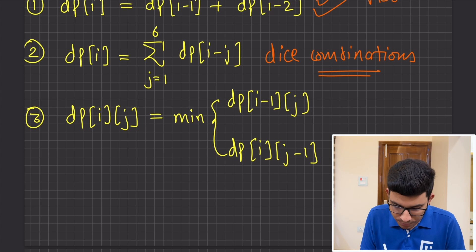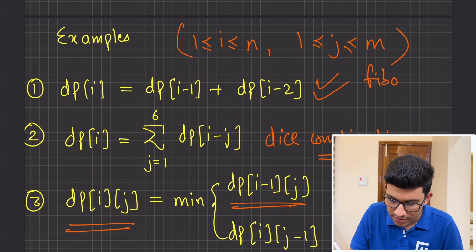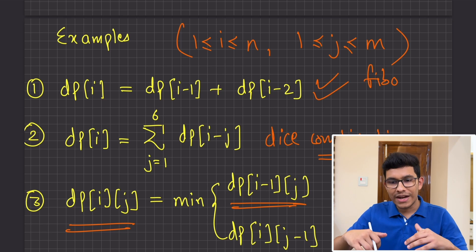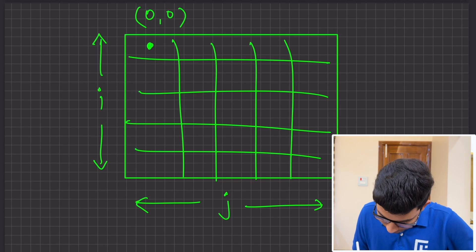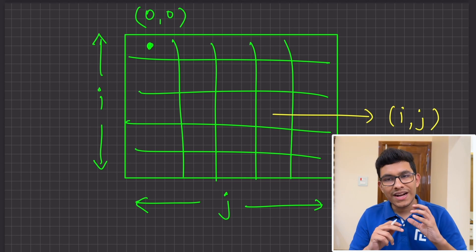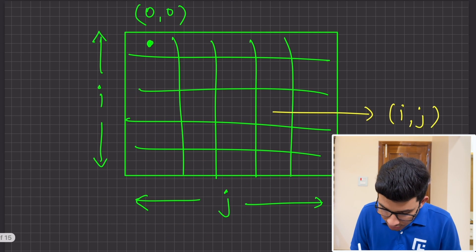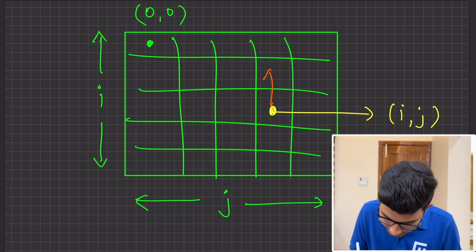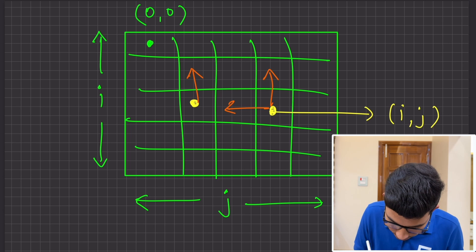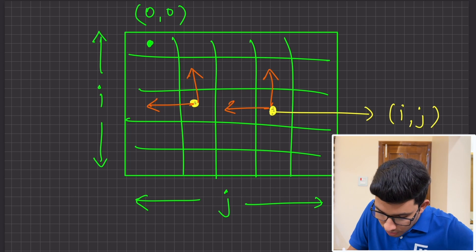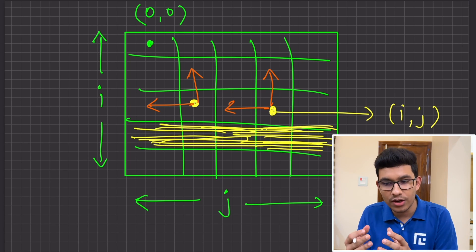Now consider a 2D case where DP of i,j depends on DP of i-1,j and DP of i,j-1. Drawing a grid, any cell i,j depends on the cell directly above it and the cell to its left. So all states in a given row are dependent only on the current row and the previous row.